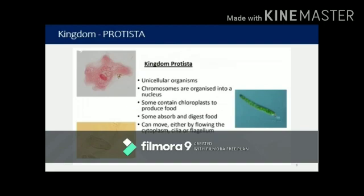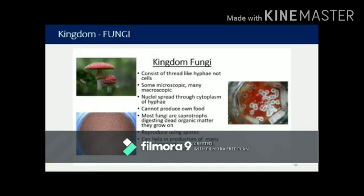The next kingdom is Protista. Here also we have unicellular organisms, but the chromosomes are a little bit organized into a nucleus. Some Protista contain chloroplasts so that they can produce their own food — these are autotrophs. Others, like Amoeba, absorb and digest food — these are heterotrophs. They can move either by flowing cytoplasm, or by cilia or flagella, which are the organs of their movement.